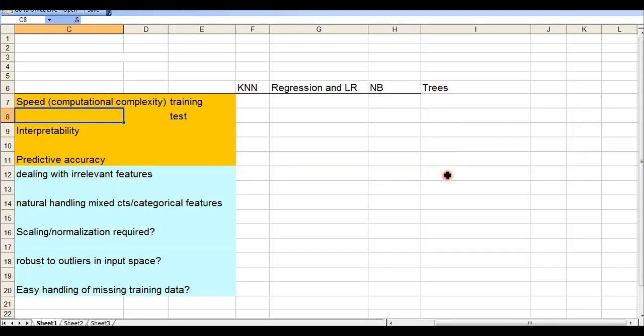Dealing with irrelevant features: that's a tick because trees will just ignore irrelevant features over the splits. Natural handling of mixed categorical features: tick, yes it does. You've seen in the examples this week where you can partition by continuous predictors but also by categorical features. Is normalization or scaling required? No, so that's less effort. Is it robust to outliers in the input space? Well yes, it depends a bit on the loss function, but it's considered robust, meaning not really affected by outliers.